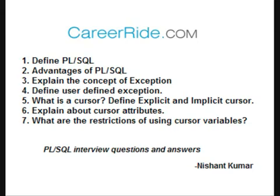Explain cursor attributes. Each cursor or cursor variable has four attributes: Found, Is Open, Not Found, and Row Count. When appended to the cursor, these attributes return useful information about the execution of a data manipulation statement.